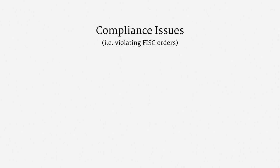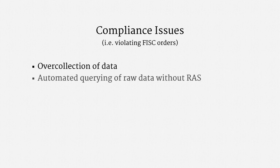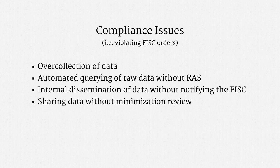Perhaps the greatest issue was massive over-collection of data, seemingly including content. The agency repeatedly told the FISC that it hadn't over-collected data, and an audit for the FISC concluded that it hadn't over-collected data. Then it turned out that was all wrong. The episode was very embarrassing for the NSA, and FISC judges were certainly displeased. Another compliance issue involved the process of querying raw email metadata — remember how that required reasonable, articulable suspicion? The agency had been making automated queries of the raw data without RAS. Yet another issue was internal dissemination of email metadata without explaining to the FISC how that would happen. And finally, the NSA shared data from the program with other federal agencies, including the FBI, without the required minimization review.